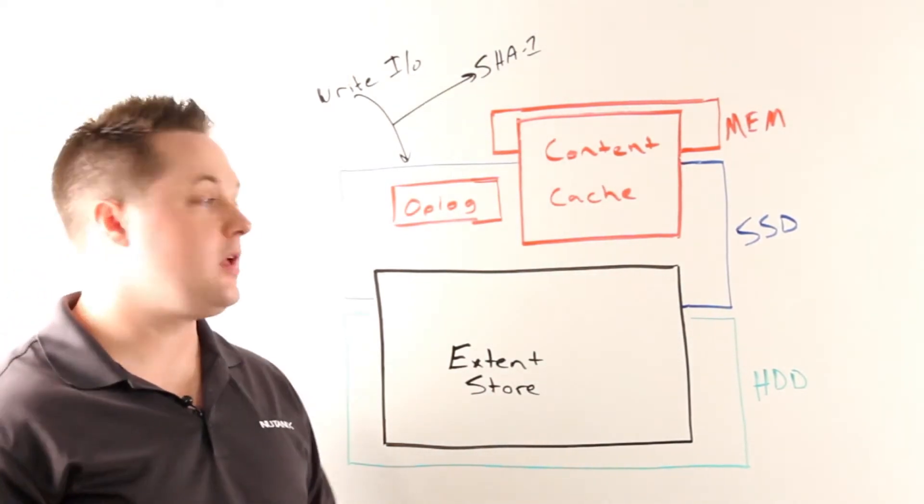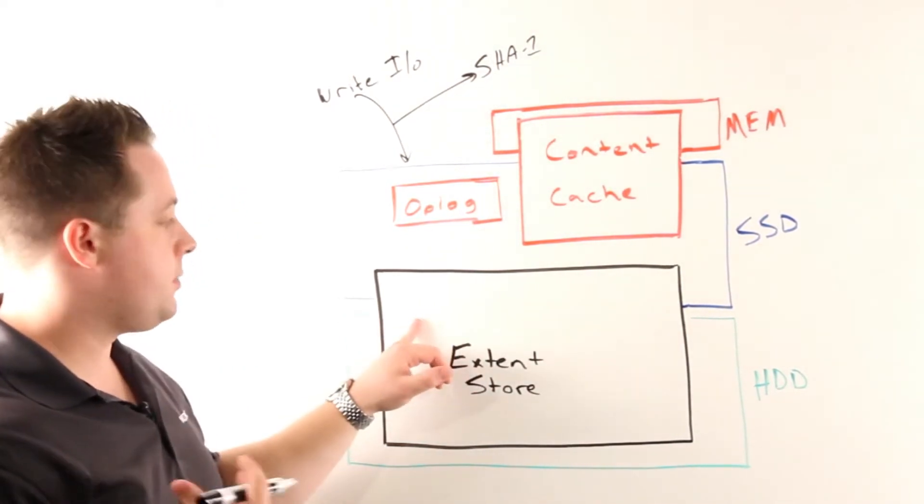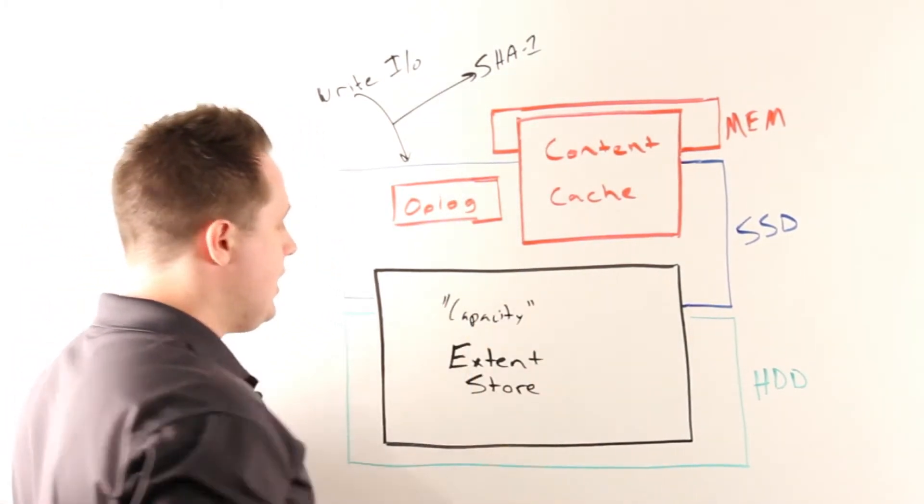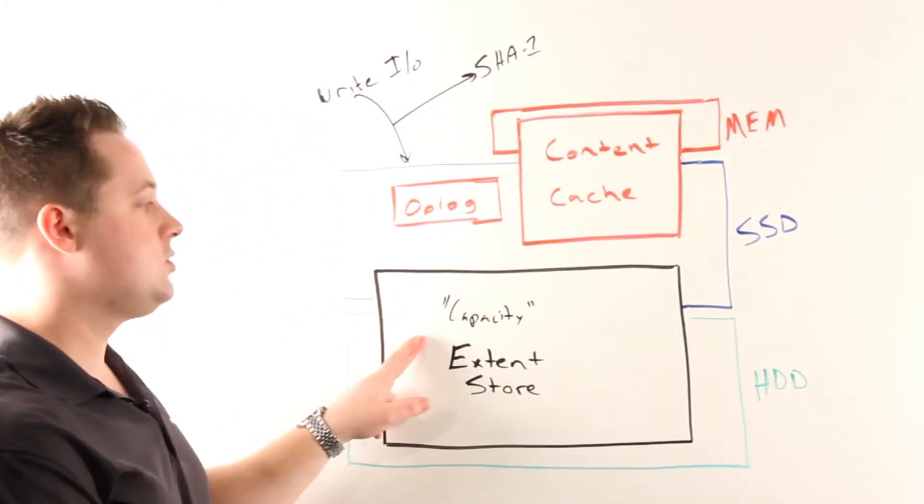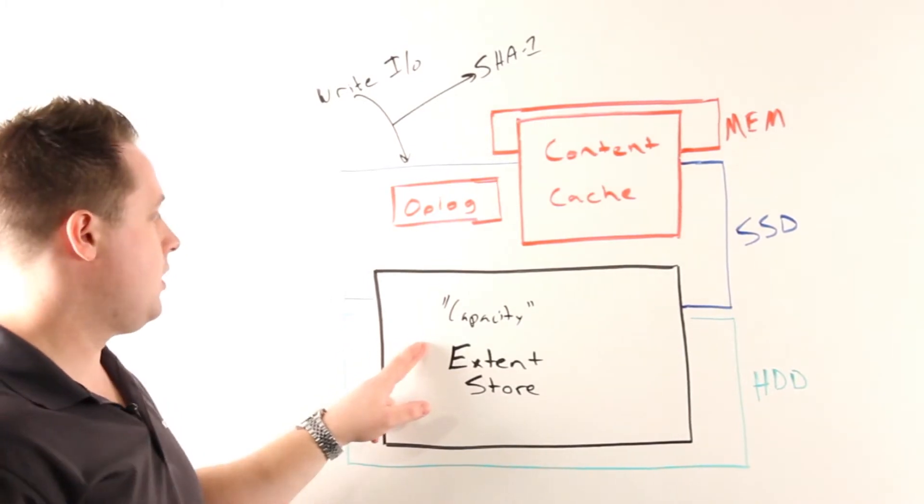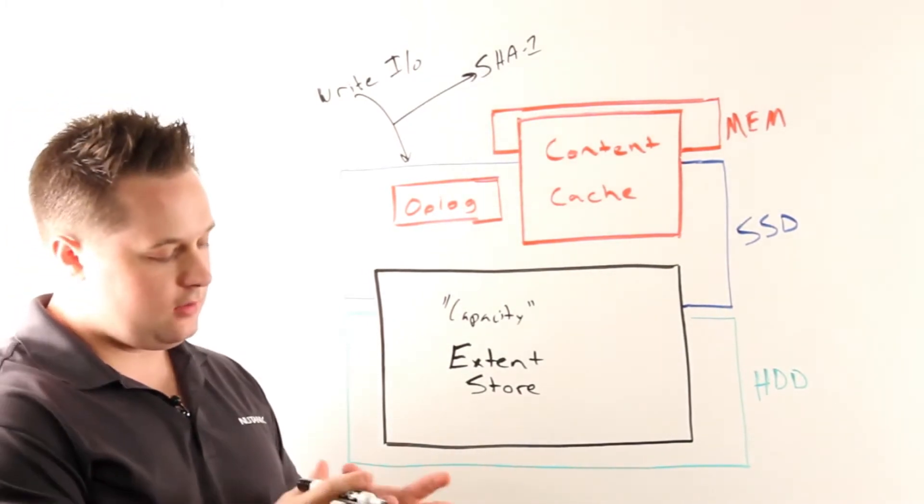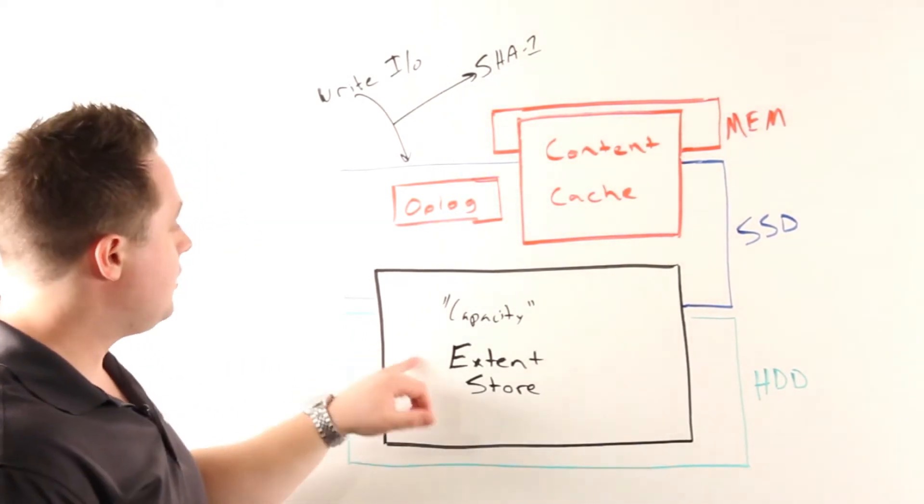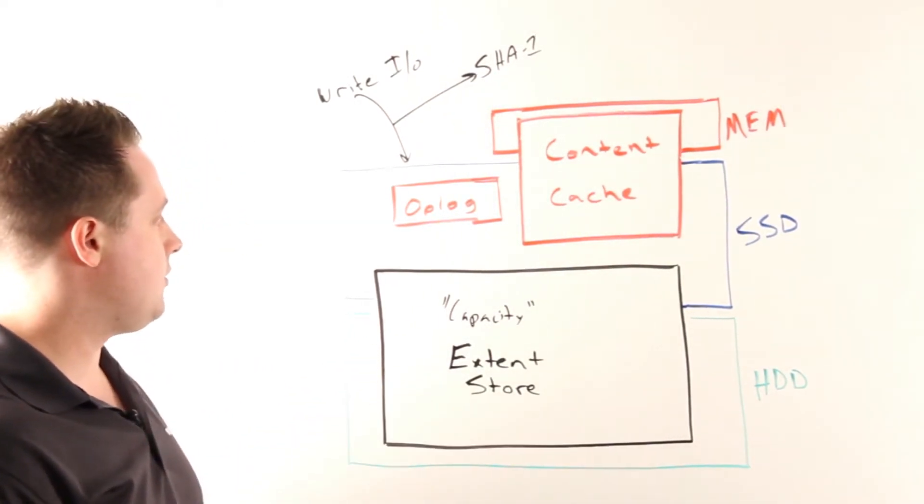We offer two forms of deduplication. One is your traditional capacity tier dedupe, which happens within the extend store. One of the key things to highlight is all nodes participate in the deduplication framework. Rather than having to reread any of the data, all we have to do is scan the metadata, look for duplicate fingerprints, and discard the data associated with those duplicate fingerprints.